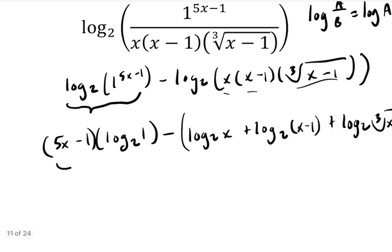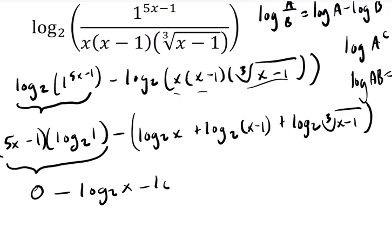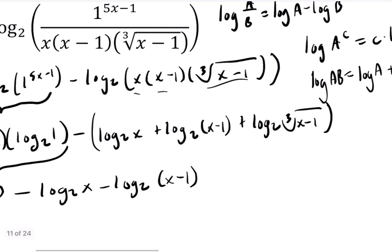This first thing right here, 2 to what power is 1? Well, that's 0, so it just cancels out to 0. Then we're subtracting everything else. We're subtracting the log base 2 of x, we are subtracting the log base 2 of x minus 1.